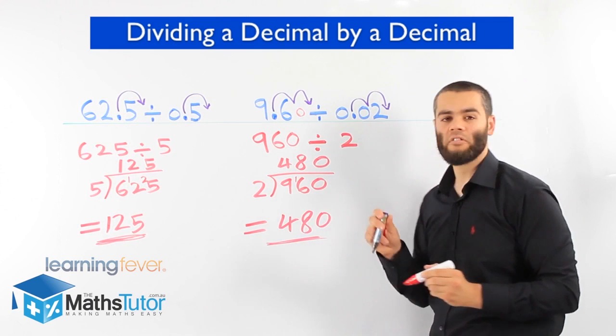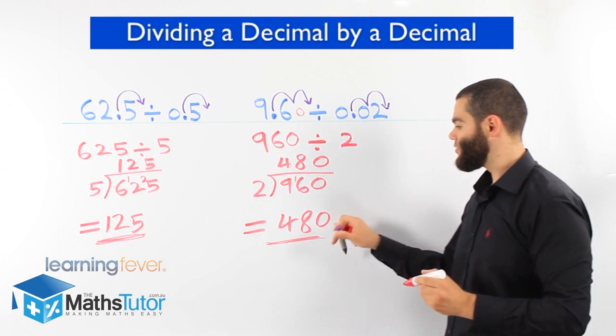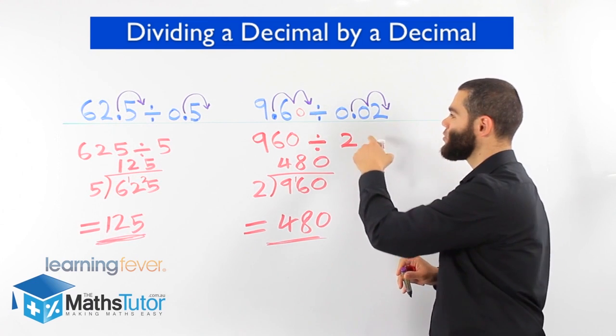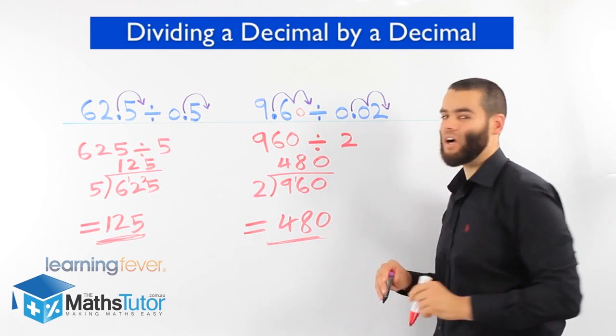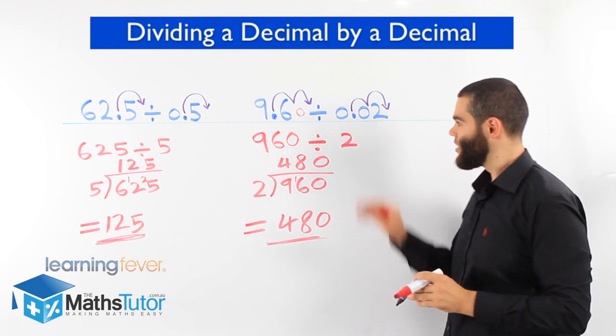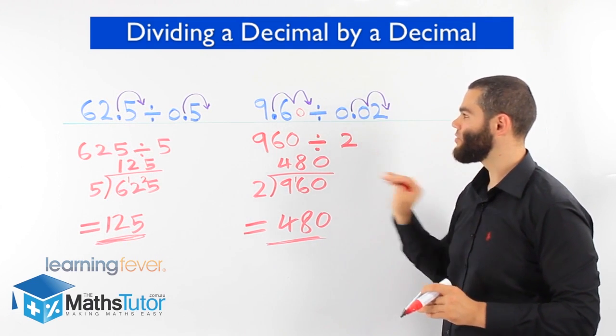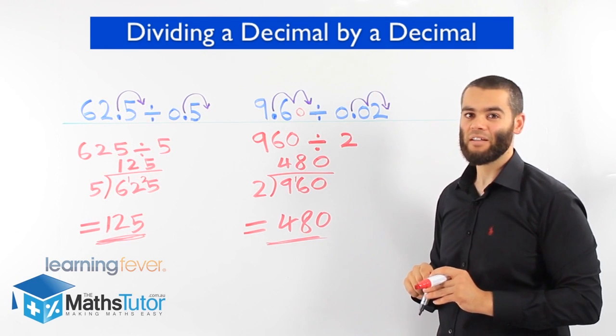So 9.6 divided by 0.02 is 480, which means 0.02 goes into 9.6 480 times. So as you can see, it's a little trick that we've got to do. This is how we divide decimals by decimals.